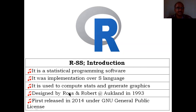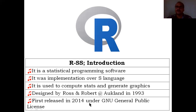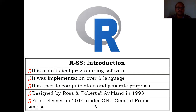R was designed by Robert and Ross — both names start with R, so you can easily remember. It was developed in 1993 at Auckland University. It was first released in 2014, but it was developed in 1993 under the GNU General Public License.